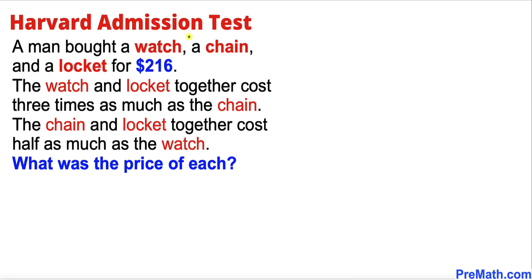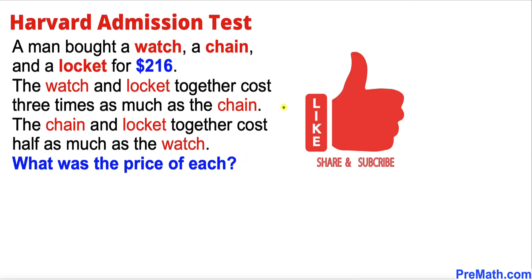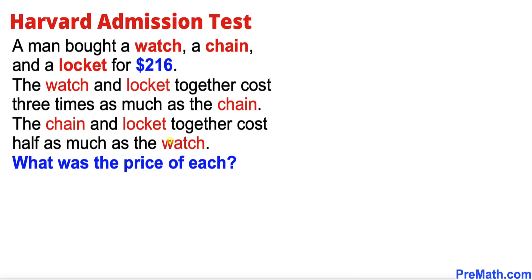Welcome to pre-math. In this video we have a hard word admission test question: a man bought a watch, a chain, and a locket for 216 dollars. The watch and the locket together cost three times as much as the chain, and the chain and the locket together cost half as much as the watch. What was the price of each item? Please don't forget to give a thumbs up and subscribe. Let's get started with the solution.